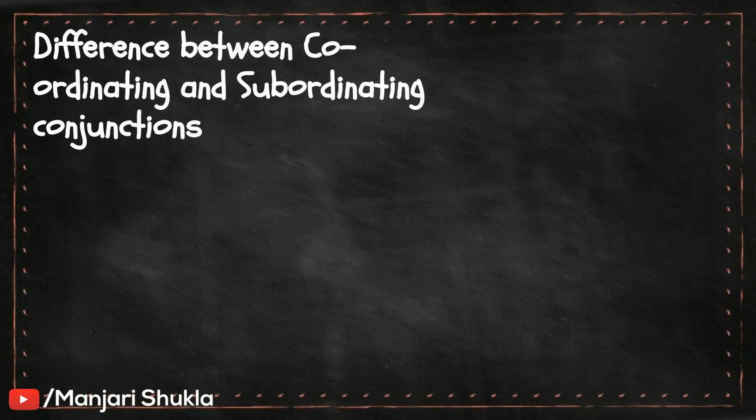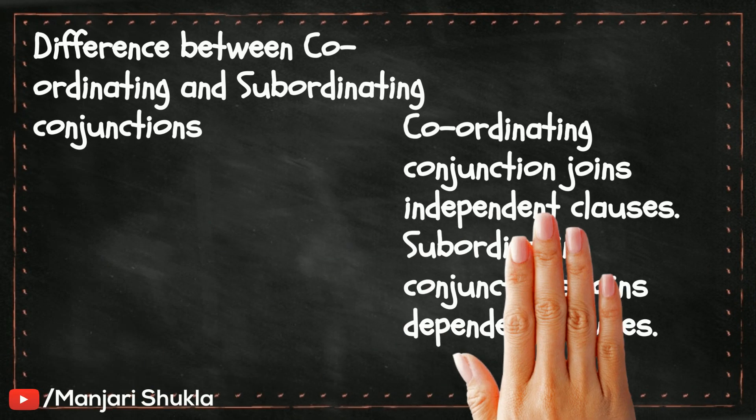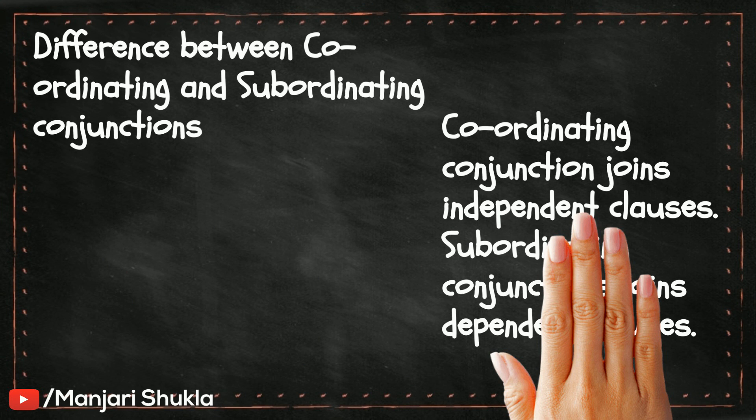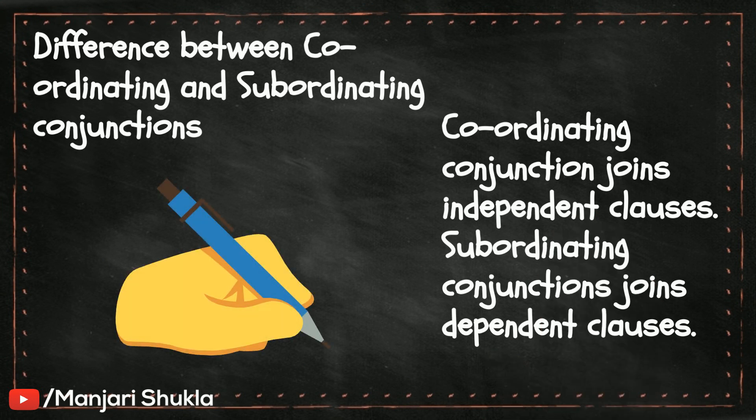The difference between coordinating and subordinating conjunctions: coordinating conjunctions join independent clauses — that is, clauses which have a proper meaning on their own.